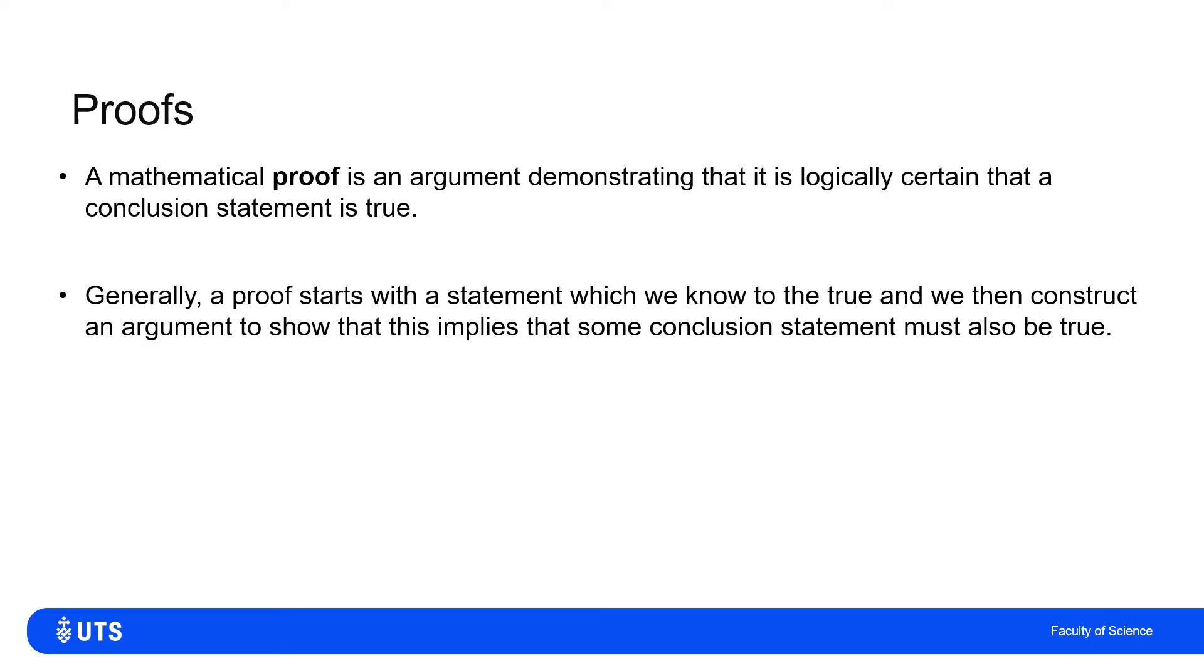As we will see over the course of this video and several others, there are a few different methods of proof, but in general we'll start with something that we know to be true. And then we will say, well if this is true, something else must be true. And that means something else must be true. And therefore, within a few links of logic down the chain, we can show that this means that our conclusion is logically certain to be true.